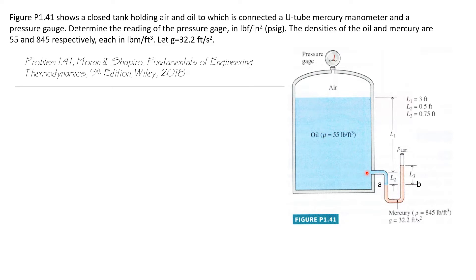The oil is shown in blue and the mercury in pink. We want to know what the gauge pressure reads. We're given the densities of oil and mercury and also the acceleration of gravity. Let's see how we're going to solve this problem.